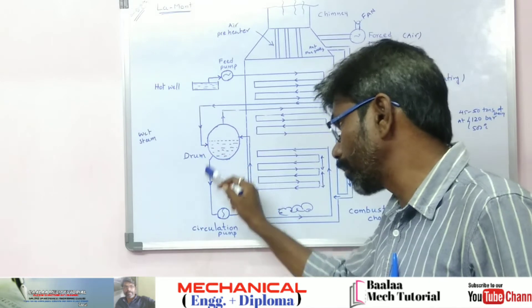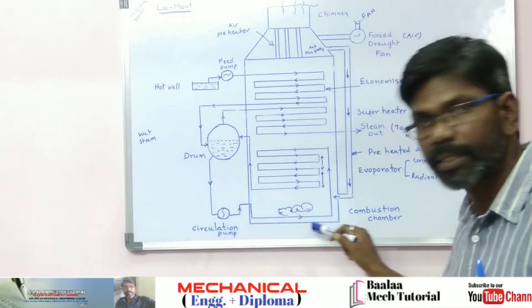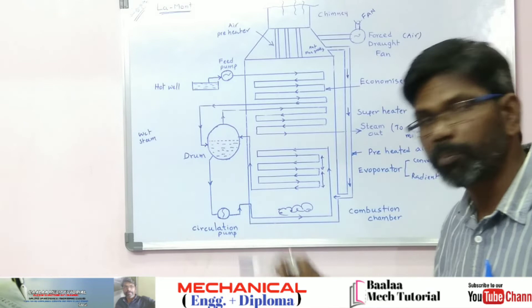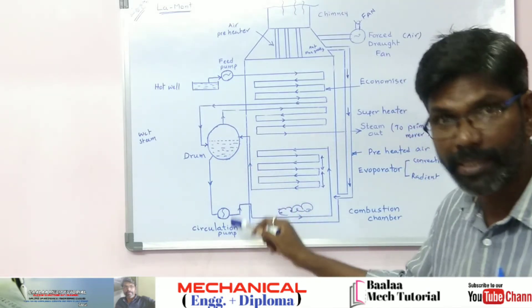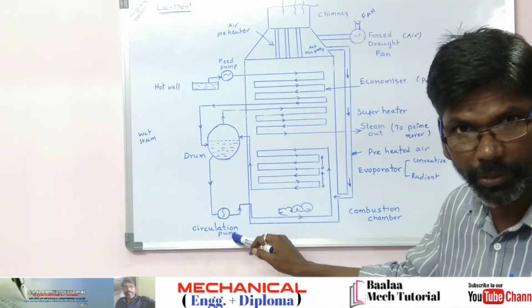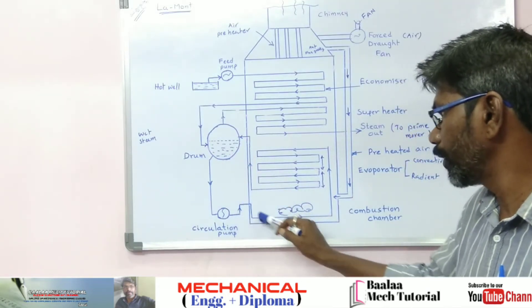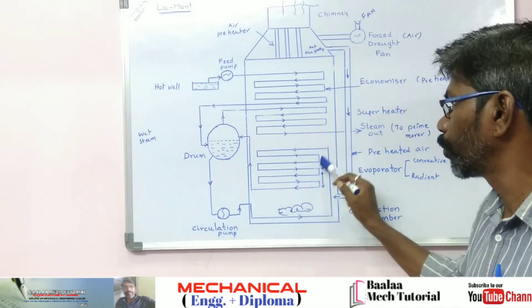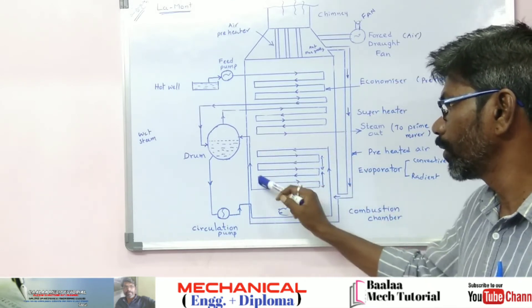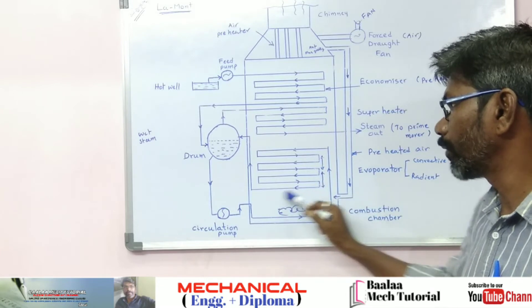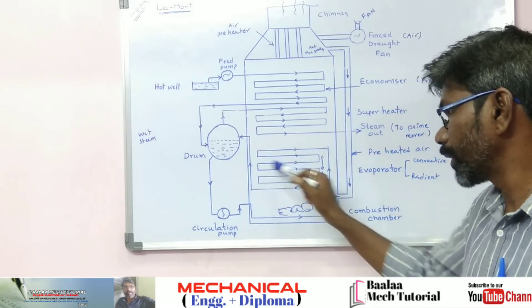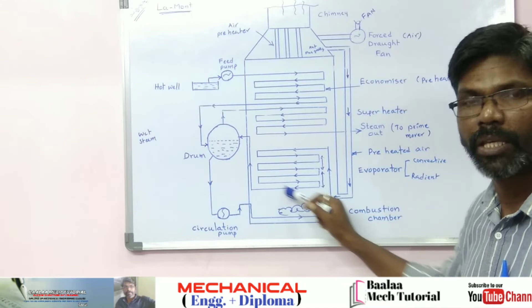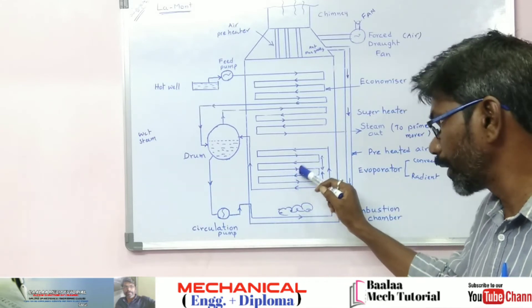Through the circulation pump, rotation is achieved. The circulation pump operates at high pressure. The high-pressure water passes through pipes. This circuit leads to the evaporator, which is the radiant evaporator.